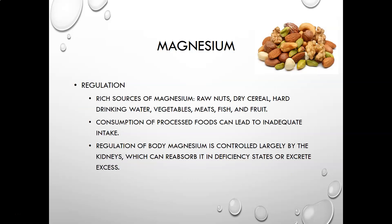Magnesium is found in raw nuts, cereals, hard drinking water or certain mineral waters, vegetables, meats, fish, and fruits. Consumption of processed foods — basic packaged junk food, frozen foods and such — can lead to inadequate intake. Regulation of body magnesium is controlled largely by the kidneys, which can reabsorb it in deficiency states or excrete it in excess.